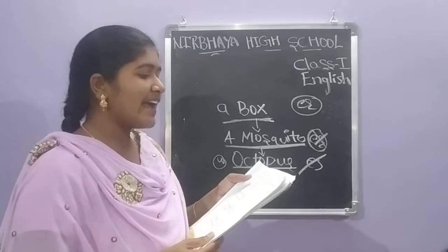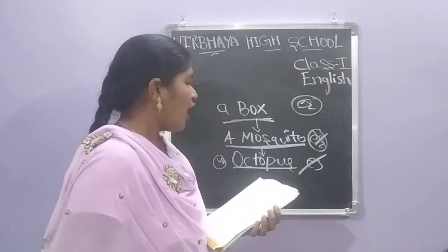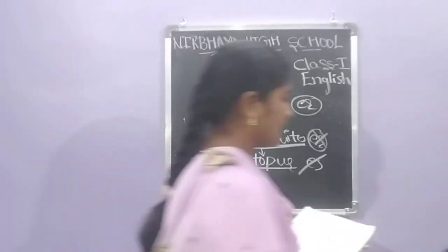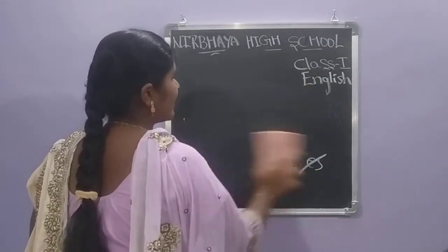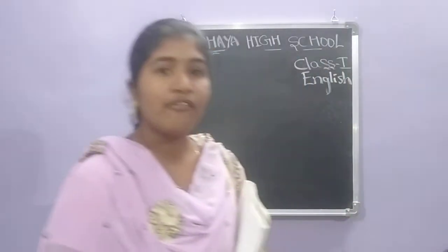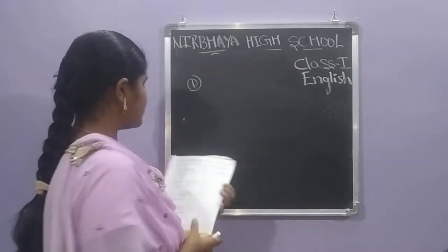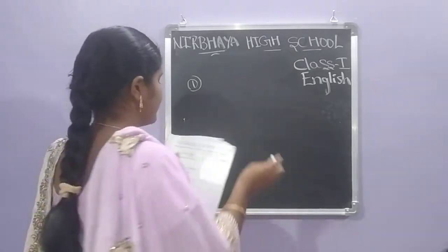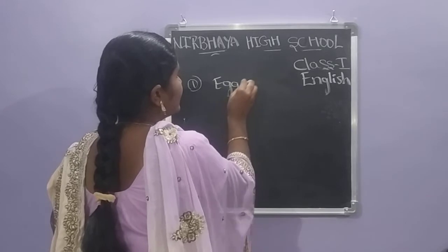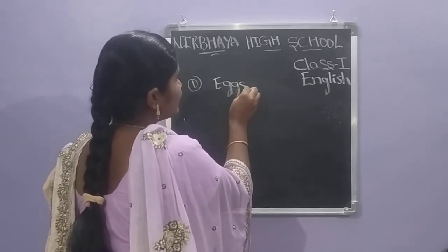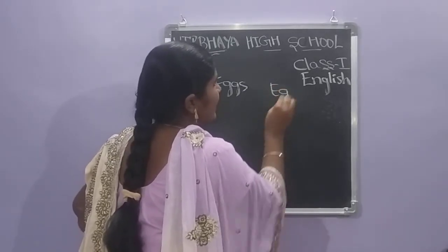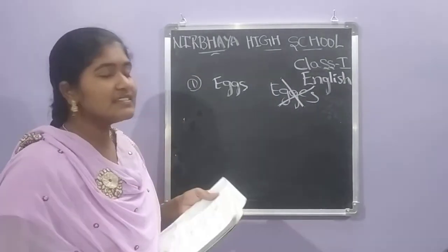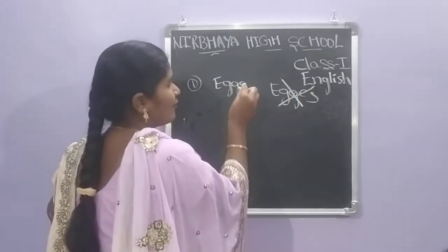Next exercise — fill in the blanks with the correct plural form from the options given in the brackets. One is done for you. He gives two options and we have to choose the correct one. First one: Mohan can eat eggs. We say 'eggs' — E-G-G-S — we add only S, not ES.